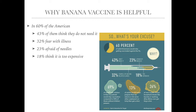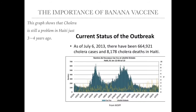In total, 60% of Americans refuse to take the vaccine. Half of the people who refuse to be vaccinated are afraid of needles. So 30% of the total population of Americans do not want to take the vaccine just because it uses a needle. Imagine when we use banana vaccine to replace the original method — it will encourage almost 30% of the total population to get vaccinated. Cholera disease was still a problem in Haiti just 3 or 4 years ago, causing 8,178 deaths in one and a half years. So using banana vaccine can save more lives.